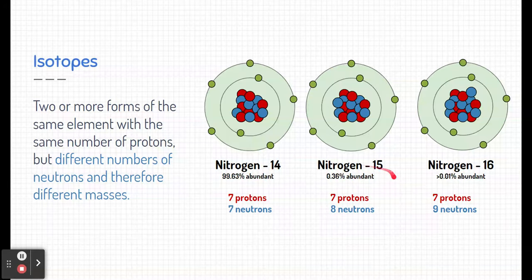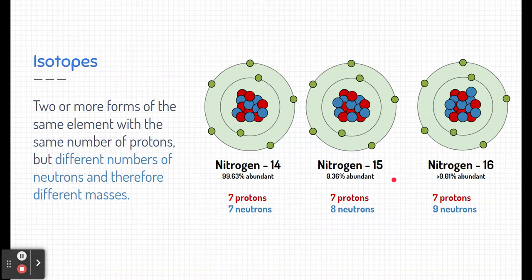Seven protons and eight neutrons represent nitrogen-15, or the mass of this isotope. And seven protons and nine neutrons represent nitrogen-16, or the mass of this nitrogen.